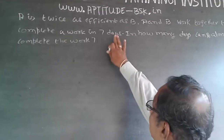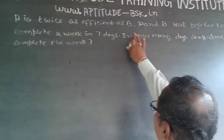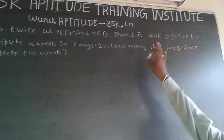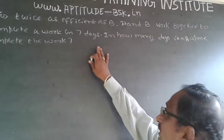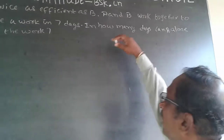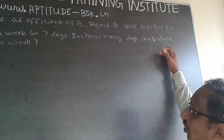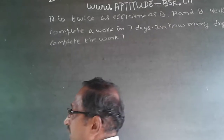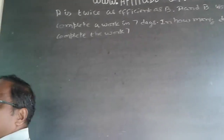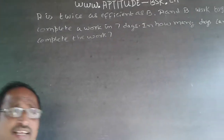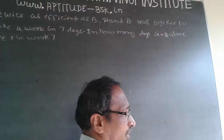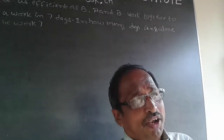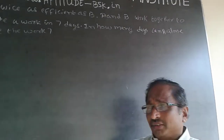A is twice as efficient as B. A and B work together to complete a work in 7 days. In how many days can A alone complete the work? This is a quantity application on time and work.